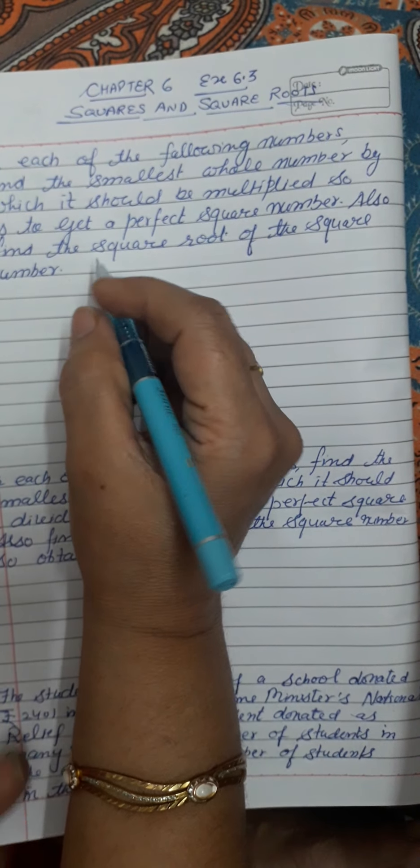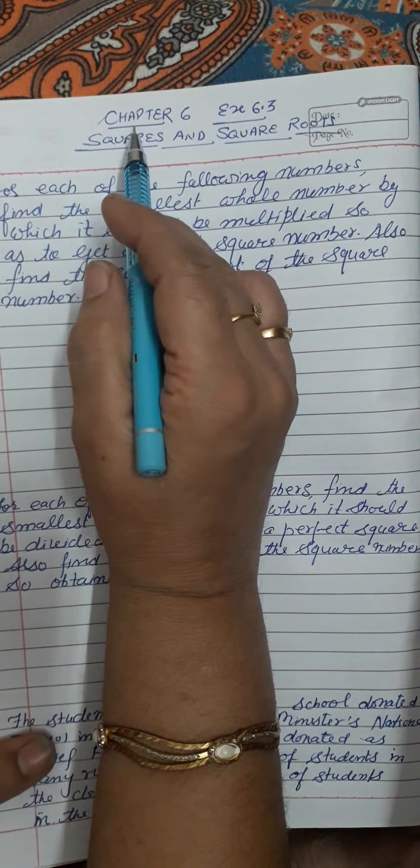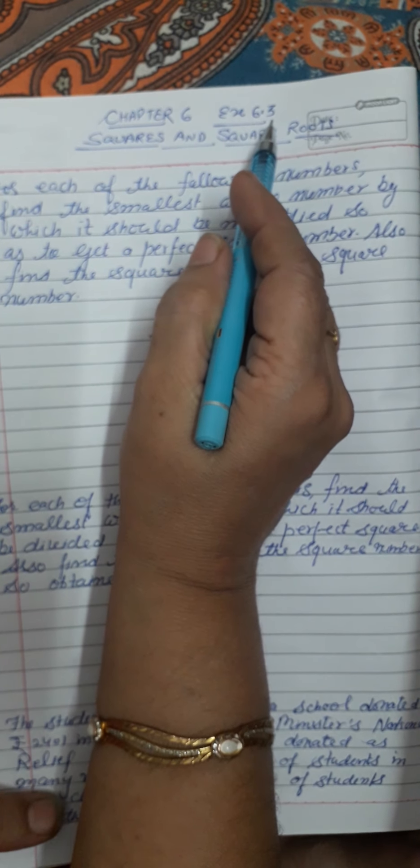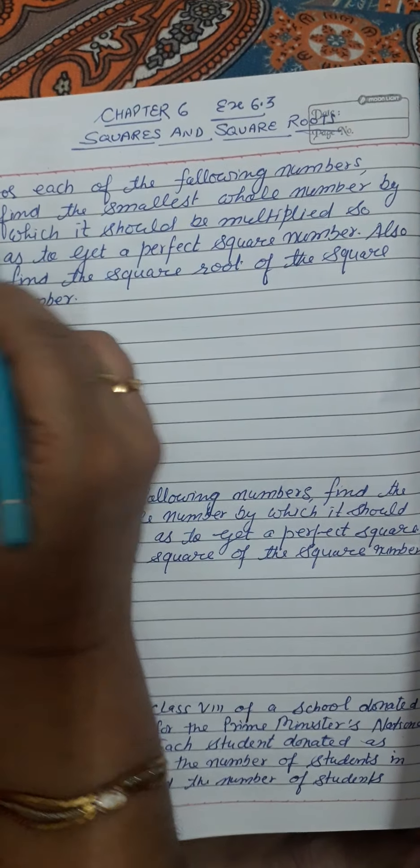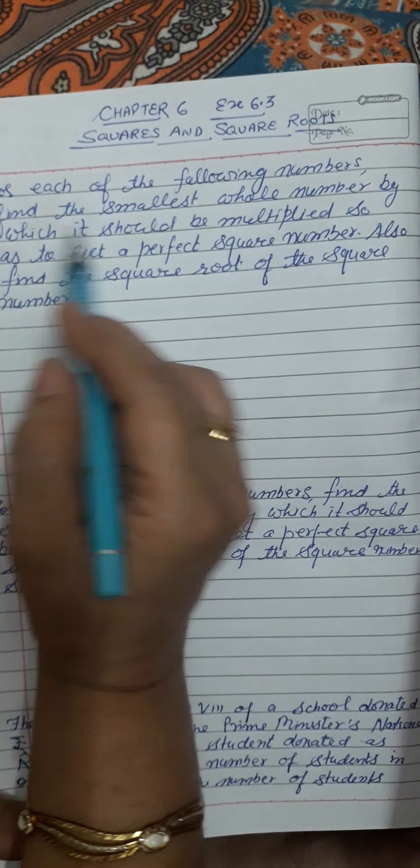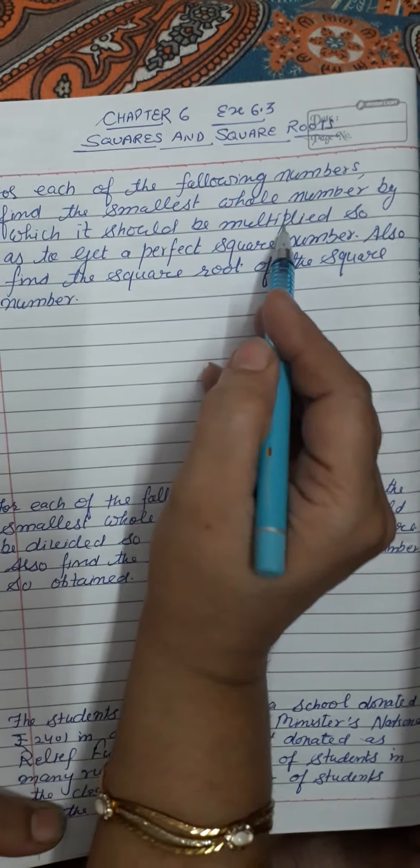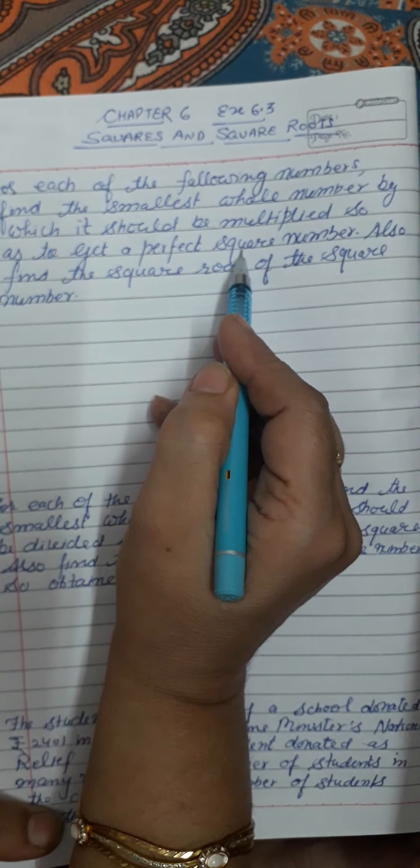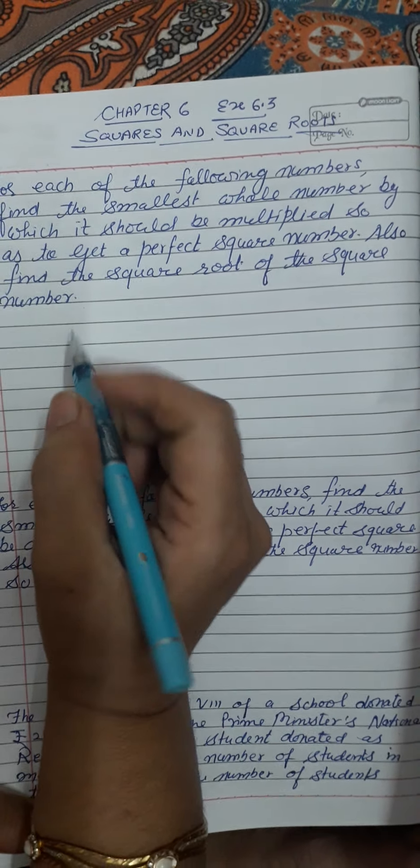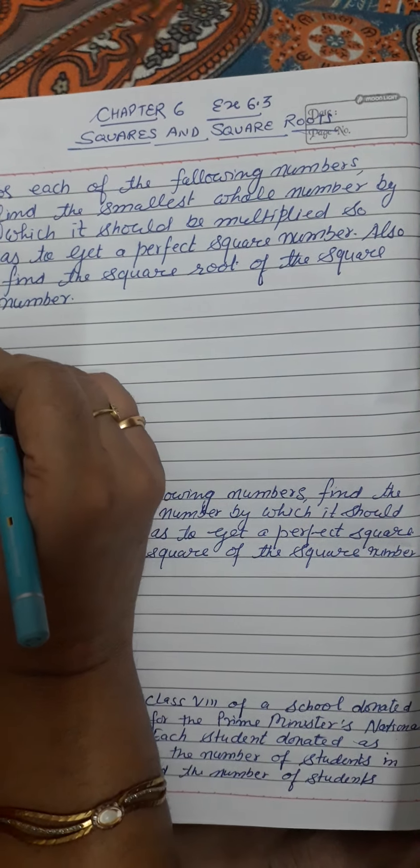Welcome everyone, how are you today? Our topic is Chapter 6, Squares and Square Roots, Exercise 6.3, Question Number 5. For each of the following numbers, find the smallest whole number by which it should be multiplied so as to get a perfect square number. Also find the square root of the square number.